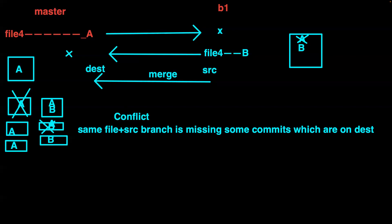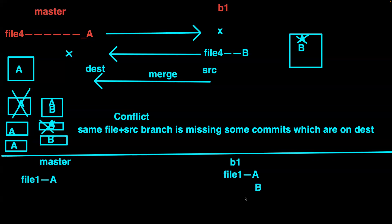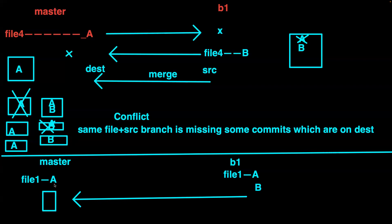There's also a no-conflict scenario with the same file: if commit A is already present on b1, then when you merge, both A and B would come together with no overwriting issue, so no conflict. The rule is: conflict happens when you have the same file AND the source branch is missing some commits that are on the destination branch. Even though the same file is involved, if the source has all the commits from destination, there's no conflict.